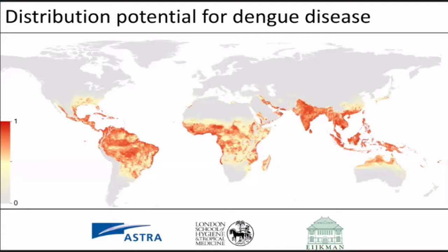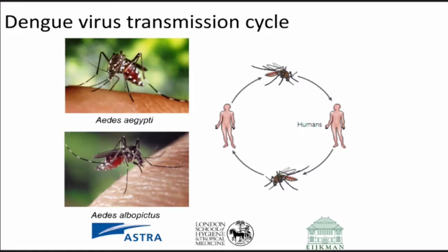Dengue disease is a disease of the tropical regions; nearly half of the world is at risk. These regions are where we find dengue because of the mosquitoes that transmit the disease. We have Aedes aegypti, which is the main transmitting mosquito, but also Aedes albopictus. This mosquito is the vector and moves the virus from one human to the next.